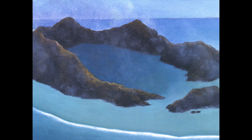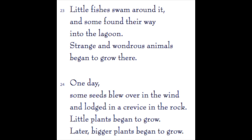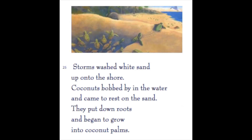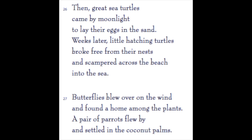The author often repeats words to emphasize sensory details — for example in paragraph 22, 'the blue, blue sea,' and in the illustration it looks quite blue. 'Little fishes swam around it and some found their way into the lagoon. Strange and wondrous animals began to grow there. Some seeds blew over in the wind and lodged in a crevice in the rock, and little plants began to grow, then bigger plants. Storms washed white sand up onto the shore. Coconuts bobbed by in the water and came to rest on the sand, putting down roots and growing into coconut palms. Great sea turtles came by moonlight to lay their eggs, and butterflies blew over on the wind. A pair of parrots flew by and settled in the coconut palms.'